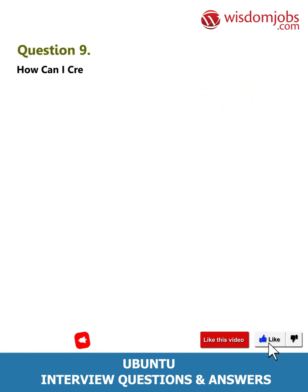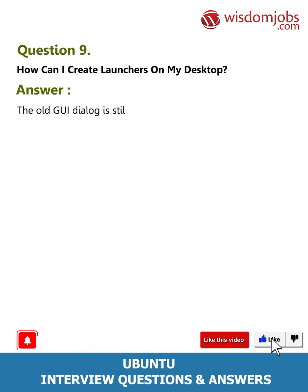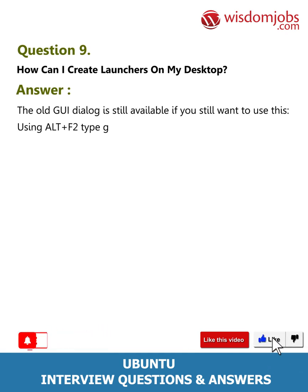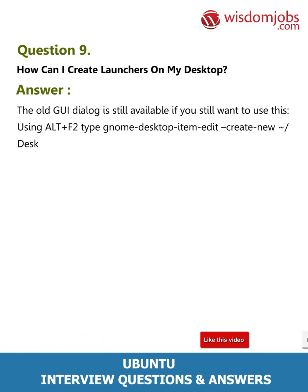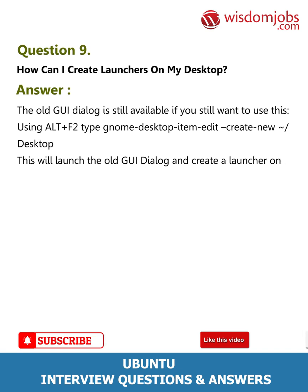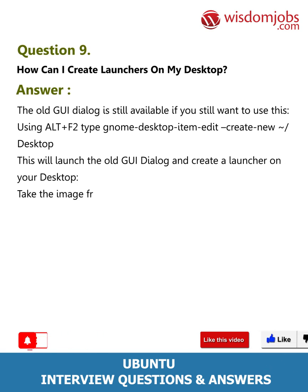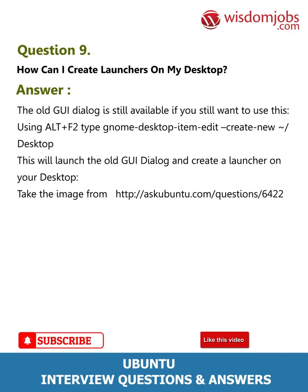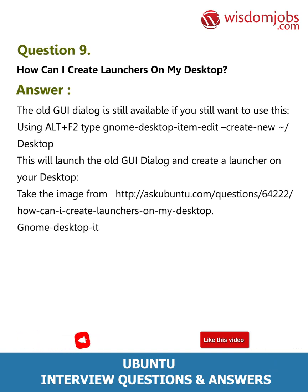Question 9: How can I create launchers on my desktop? The old GUI dialogue is still available if you want to use it. Using Alt+F2, type: gnome-desktop-item-edit --create-new ~/Desktop. This will launch the old GUI dialogue and create a launcher on your desktop. You can also refer to the guide at askubuntu.com/questions/64222/how-can-i-create-launchers-on-my-desktop.